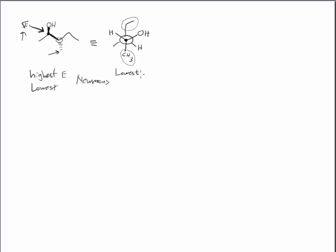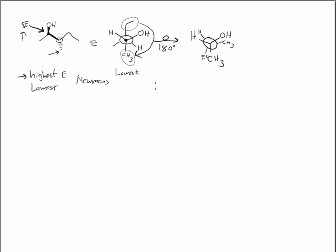That's not always going to be the case — sometimes we'll just draw one and it'll be sort of in the middle, and we'll have to rotate a little bit. In order to get the highest energy, we just need to put the two largest groups eclipsing each other. So I'm going to draw a 180-degree rotation around this carbon-carbon bond and draw an eclipsed version of the Newman projection. I'll keep the front carbon the same. The back carbon is again a circle — now with the ethyl, the hydrogen, and the methyl on the backside. All of those groups took a 180-degree rotation.